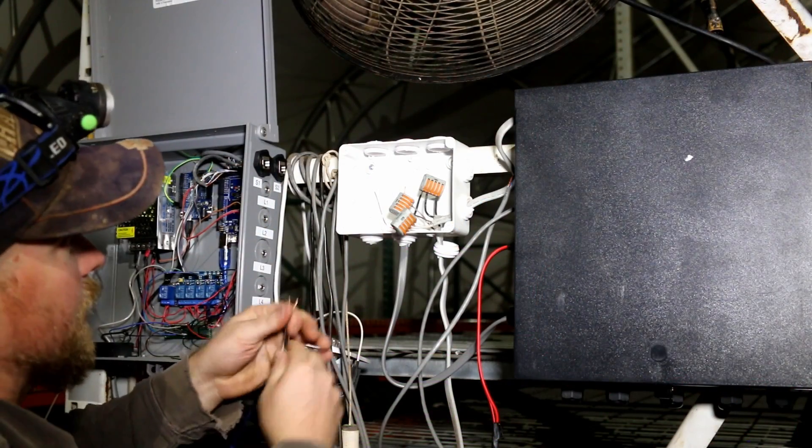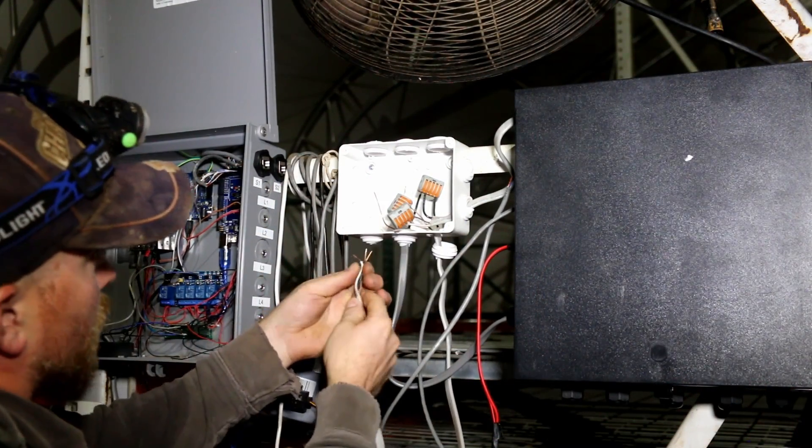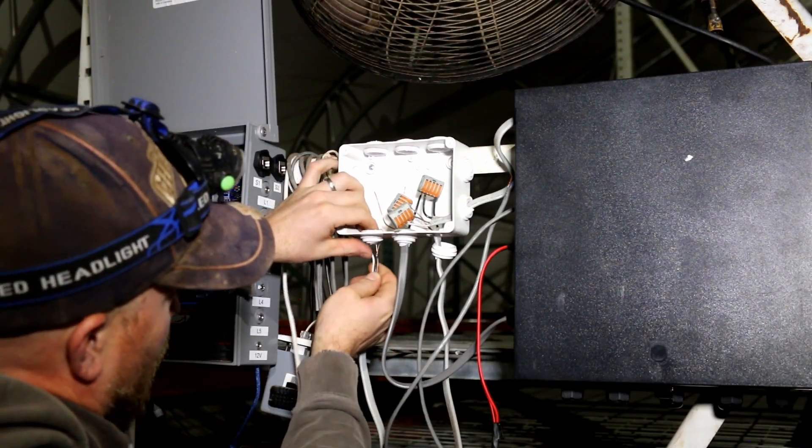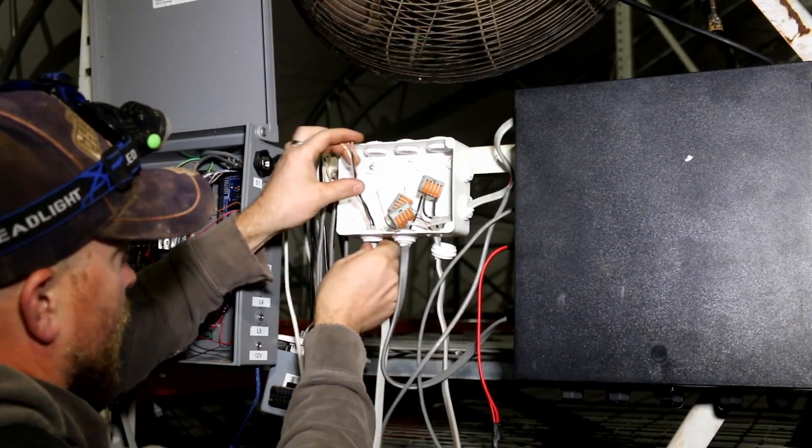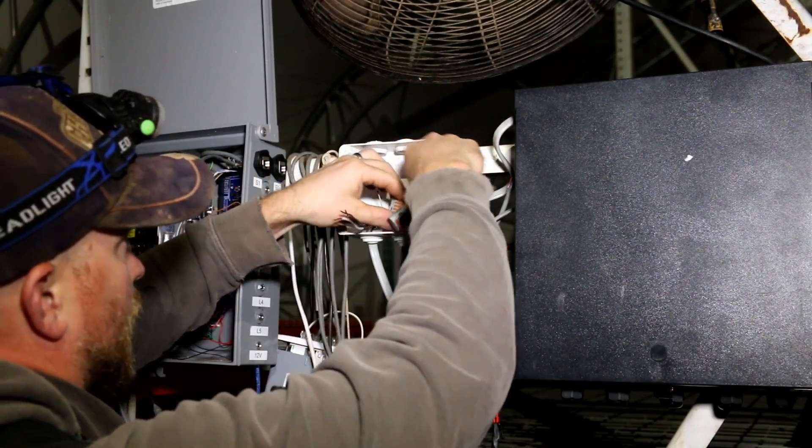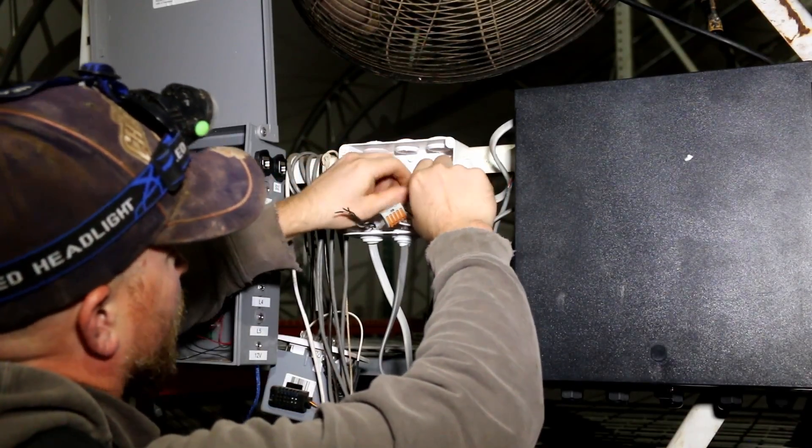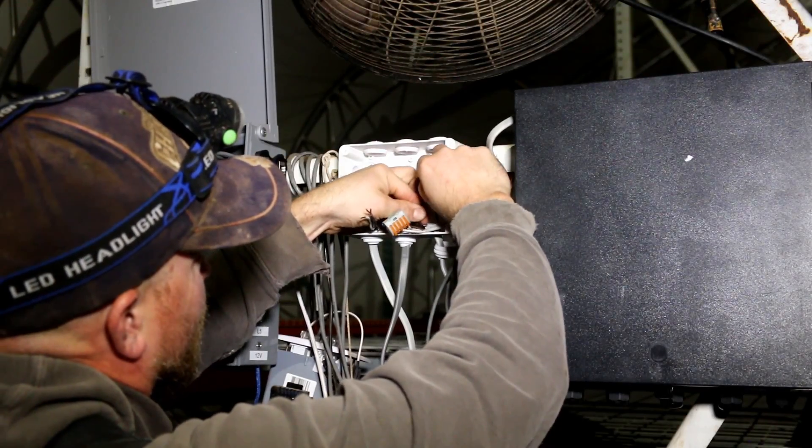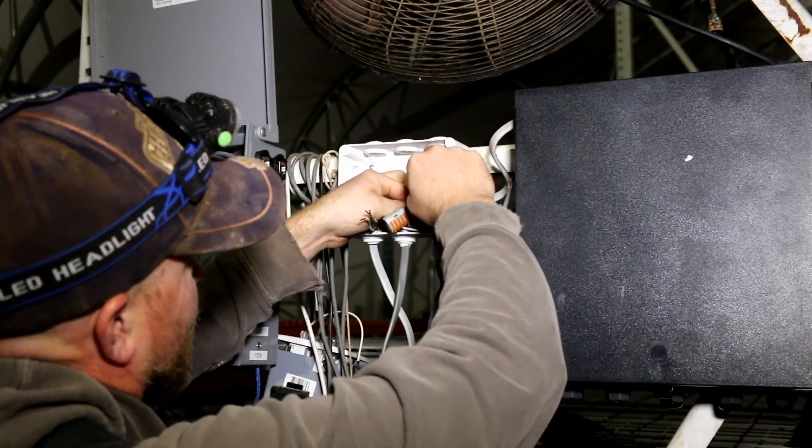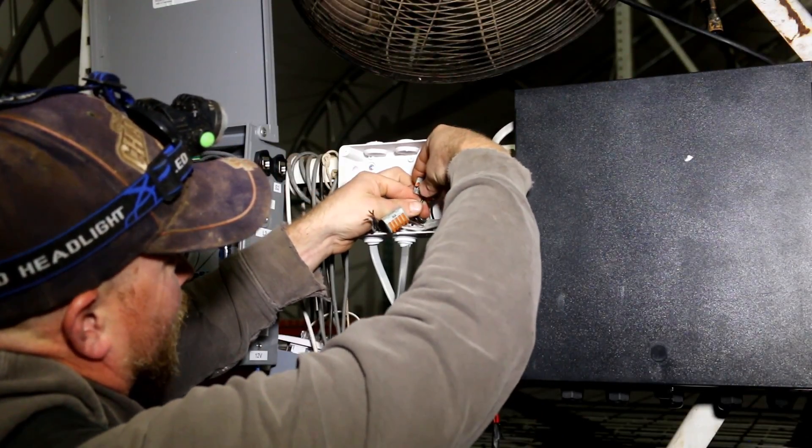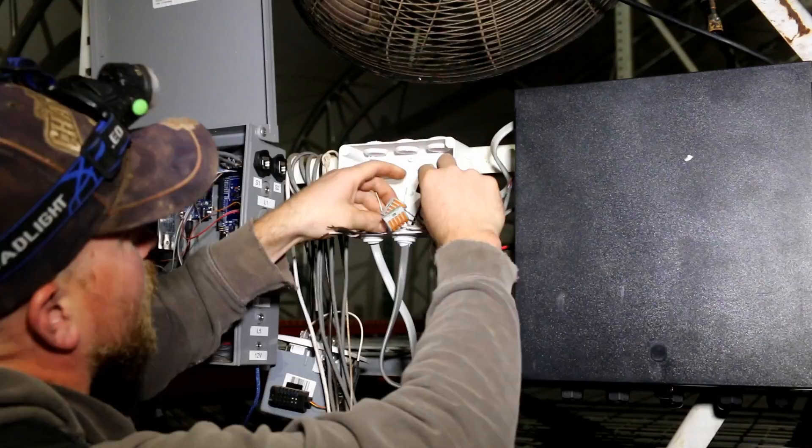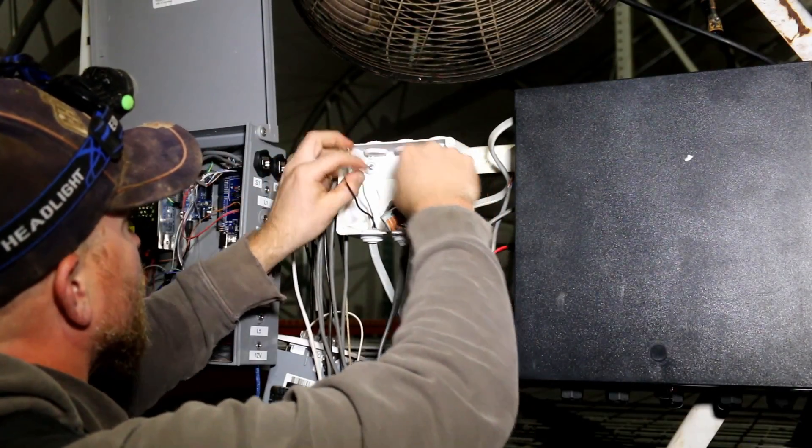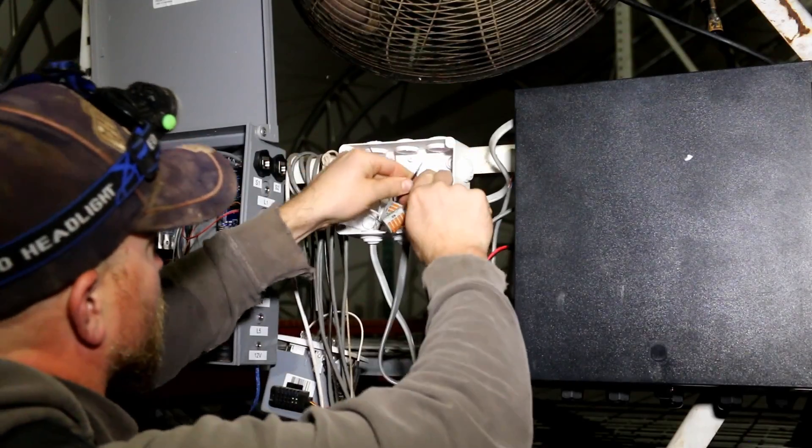So I've really come to appreciate the simplicity of these quick connect items here. Whoever thought of those, the electrician thought of those, nice job. Especially when you're doing stuff like this where you're kind of not really sure what you're doing and you need to connect and disconnect stuff fairly often. This is really nice, you just flip these little orange levers up here and then flip them back down and that locks everything in place, pretty nice.